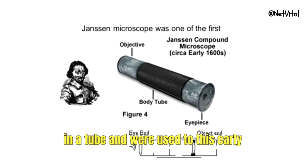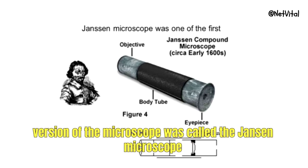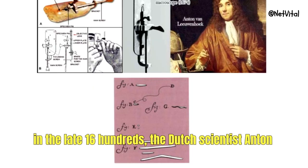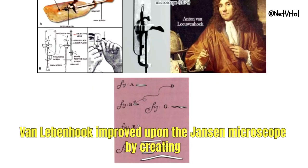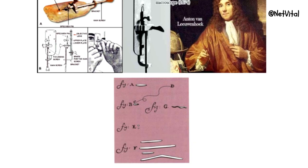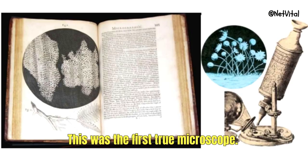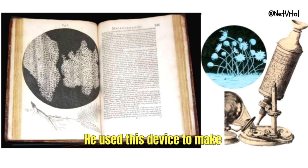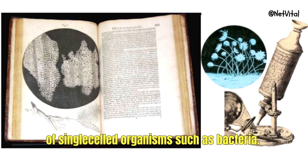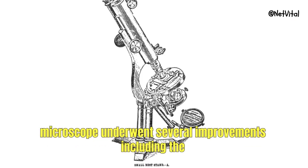This early version of the microscope was called the Jansen microscope. In the late 1600s, the Dutch scientist Anton van Leeuwenhoek improved upon the Jansen microscope by creating a single lens microscope capable of magnifying objects up to 270 times. This was the first true microscope, and he used it to make many groundbreaking observations, including the discovery of single-celled organisms such as bacteria.